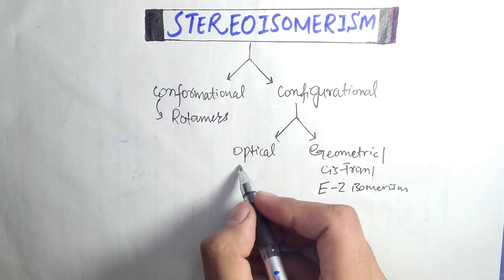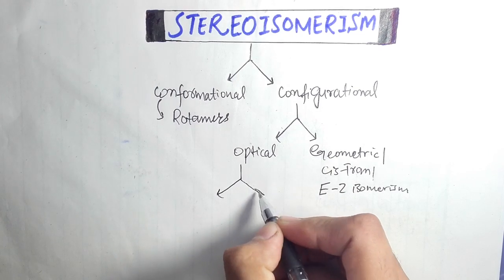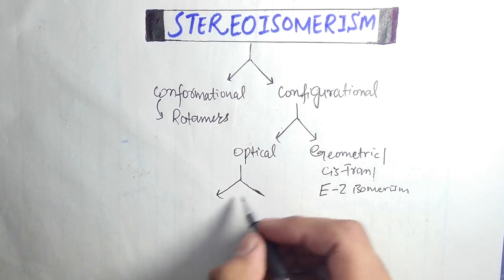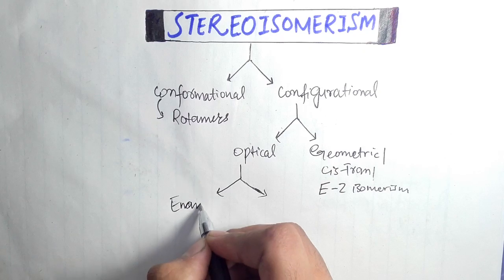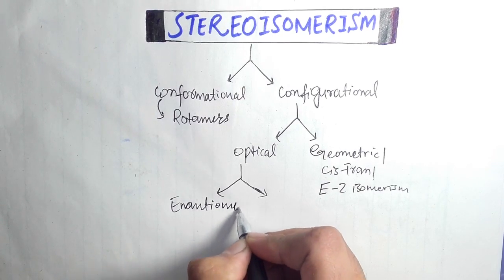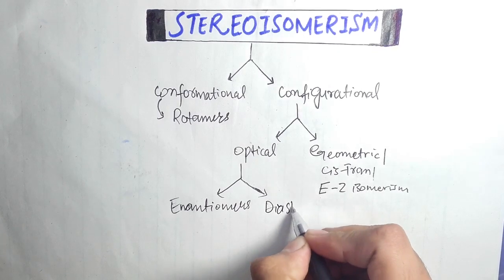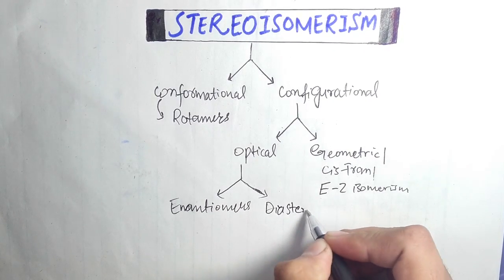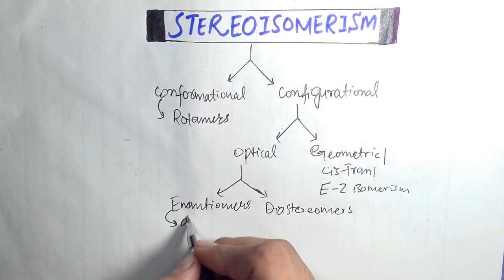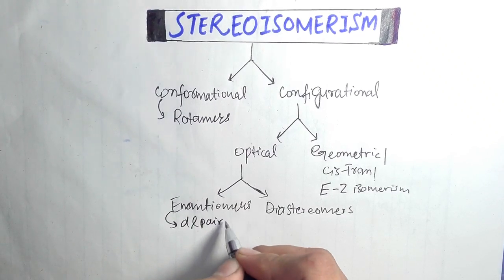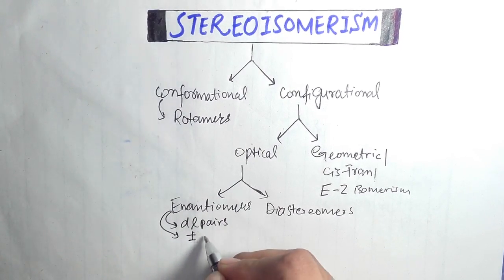Optical isomerism is further divided into two types: enantiomers and diastereomers. Enantiomers are also known as D-L pairs or plus-minus pairs.